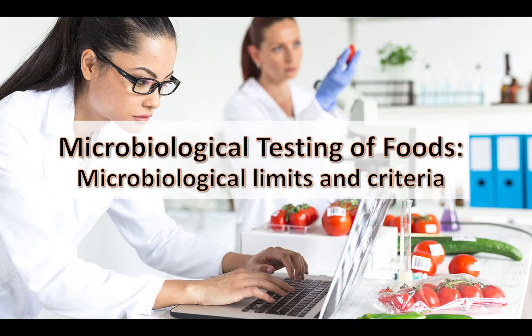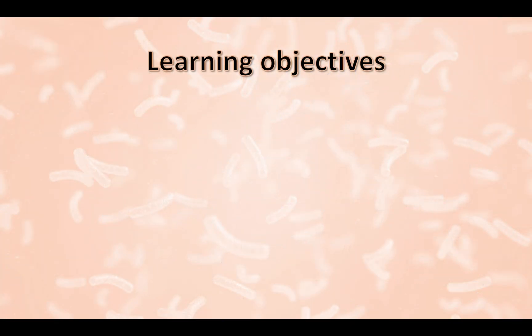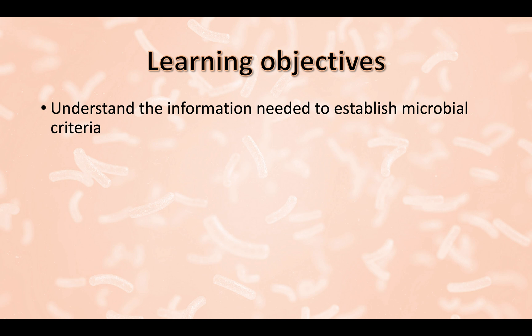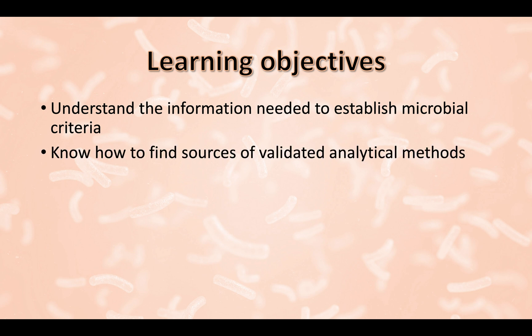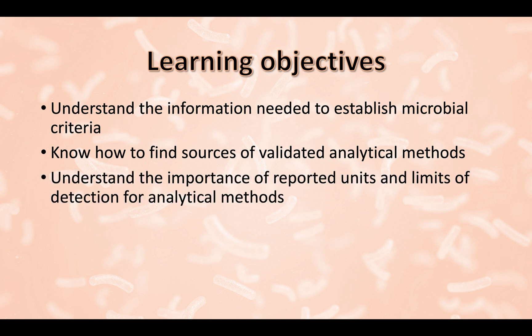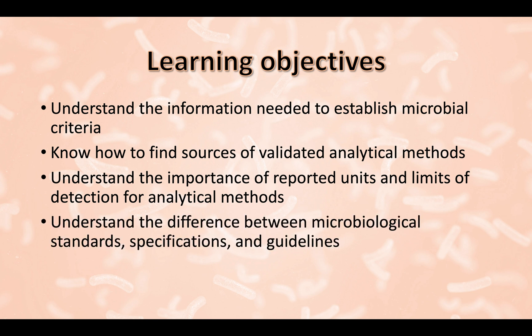This is the module on microbiological testing of foods, and this lecture covers microbiological limits and criteria. This presentation aims to aid in the understanding of the type of information needed for establishing microbial criteria, to assist in finding sources of validated analytical methods, and to define the importance of units and limits of detection for these methods. Finally, we will define the difference between microbiological standards, specifications, and guidelines.